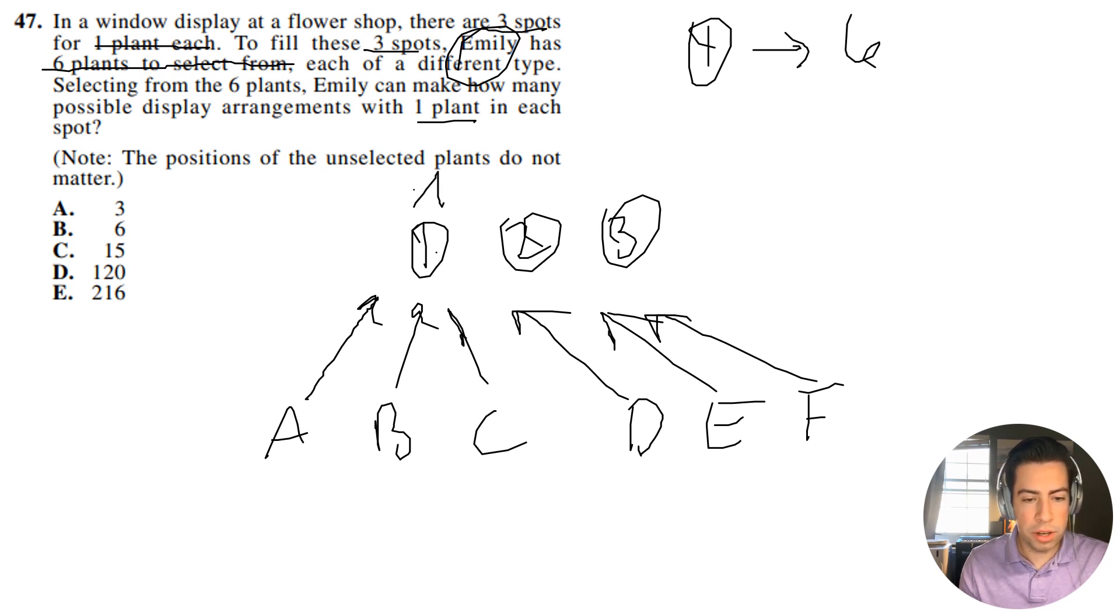All right guys, so now let's say I choose to put A here. Now for this second one, I only have five options to choose from, right? So for the second spot, she could only choose five options.